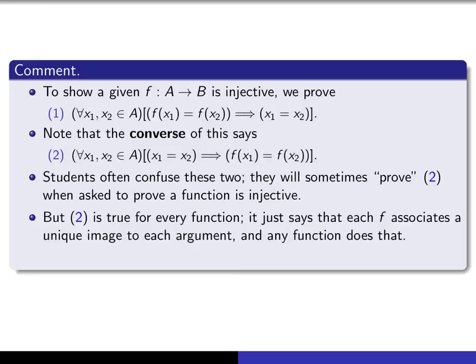If f is a function, then X1 can only have one image, namely f(X1). X2 can only have one image, namely f(X2). So if X1 and X2 are equal, then of course f(X1) has to equal f(X2). So this is not what it means to say that f is injective. It's always true. Whereas number one is not always true. Some functions are injective, some functions are not. So this is the one that you need to prove if you're trying to show that f is injective.